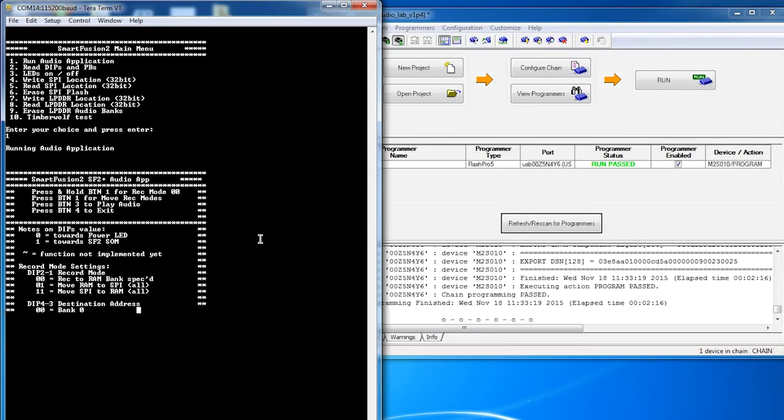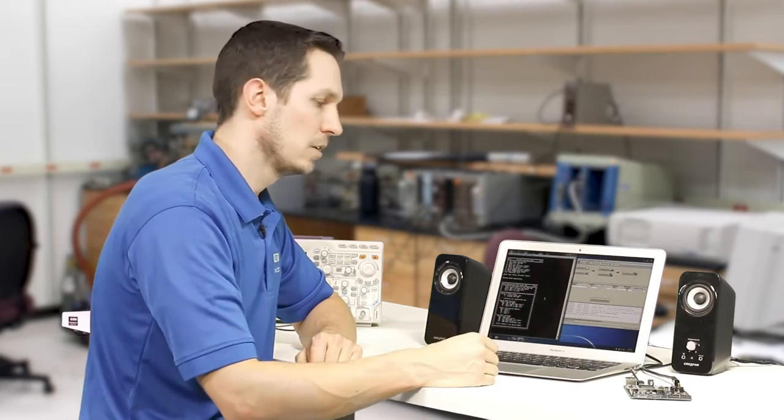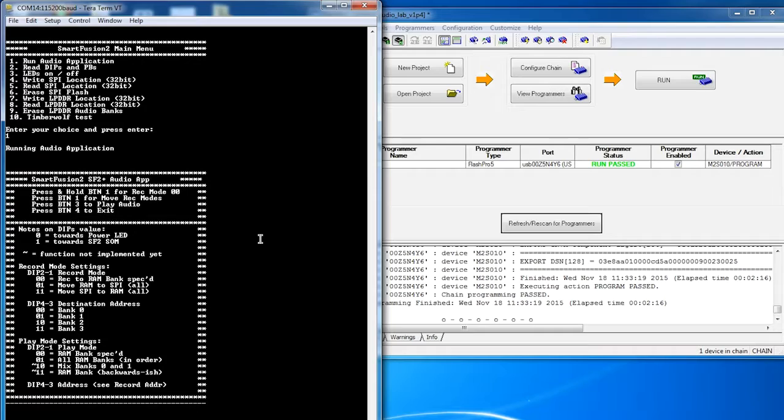just press one, press enter, and it gives me all the options of what I need to do. So, it says press and hold button one for record mode.